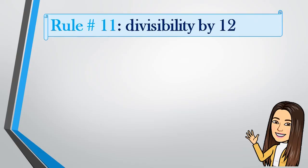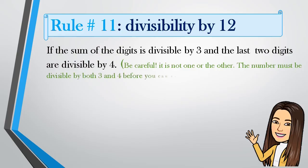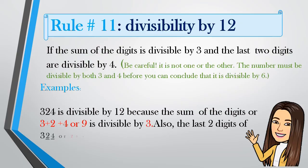Rule number 11: Divisibility by 12. A number is divisible by 12 if the sum of the digits is divisible by 3 and the last two digits are divisible by 4. Be careful — it is not one or the other; the number must be divisible by both 3 and 4. Example: 324 is divisible by 12 because 3 plus 2 plus 4 equals 9 and 9 is divisible by 3, and the last two digits, 24, is divisible by 4. So 324 is both divisible by 3 and 4, therefore it is divisible by 12.